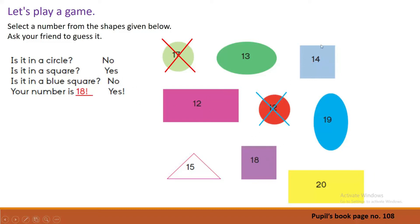If there are numbers in a square, what are the numbers? The numbers in squares are 14 and 18. Next question: is it in a blue square? Is it in a blue square? No. So the number is not 14. Now you can guess the answer — your number is 18. Yes, it is correct.